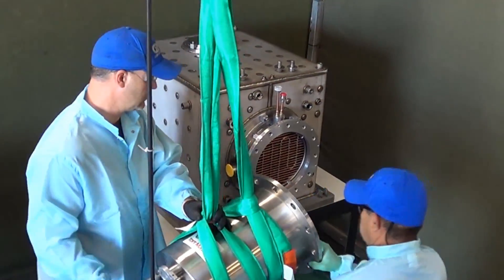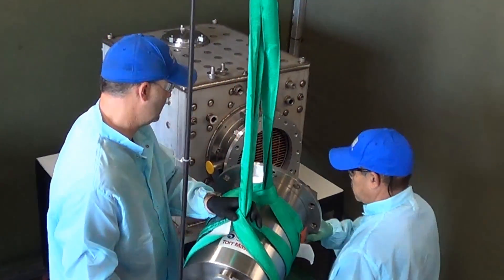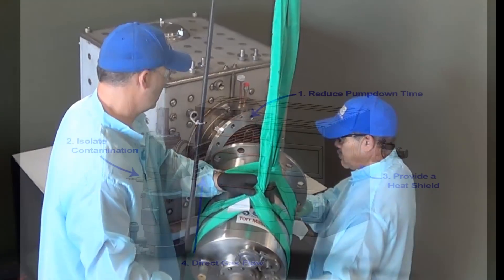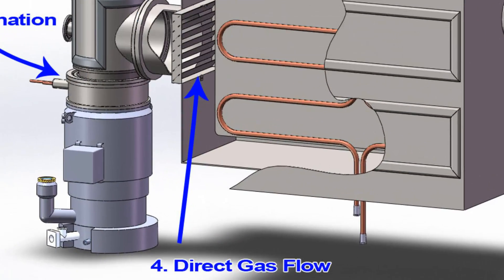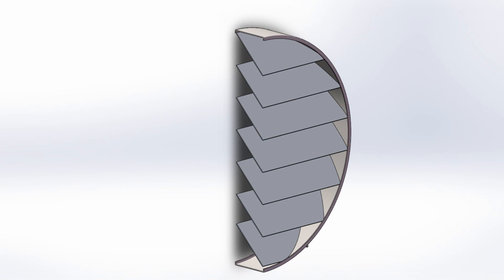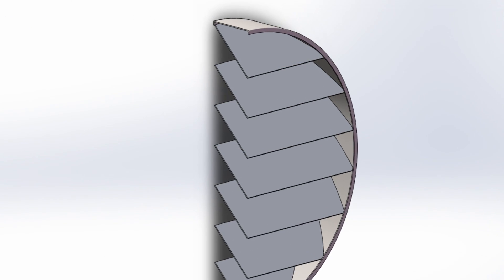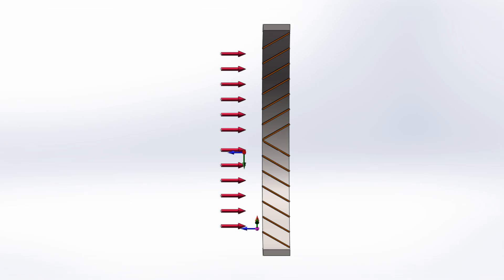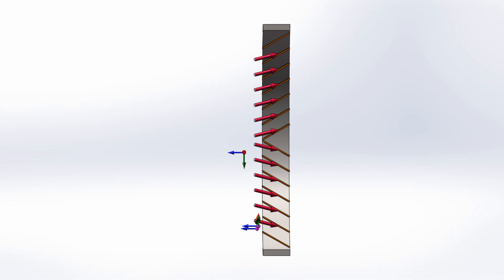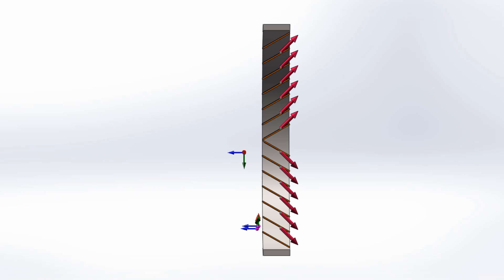The fourth use of a baffle is to direct the flow of gases. For this purpose, a baffle does not need to be cooled. The louvers of a baffle diffuser direct the flow during a rapid pump-down or during venting of the chamber, so the gas flow is directed away from parts and vacuum system components.